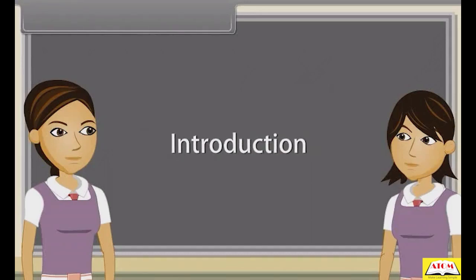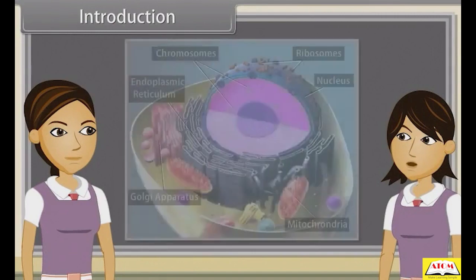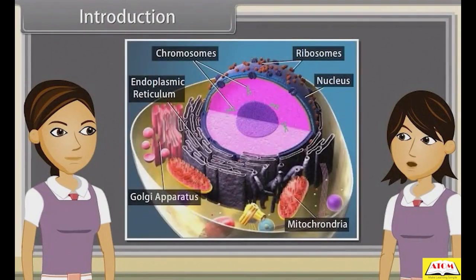Hey Ankita, we have discussed the structure of the endomembrane system, endoplasmic reticulum, Golgi apparatus, lysosomes, vacuoles, mitochondria, plastids, and ribosomes.